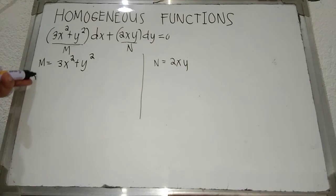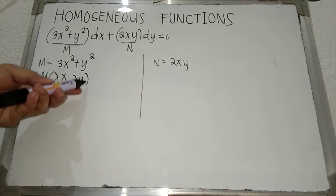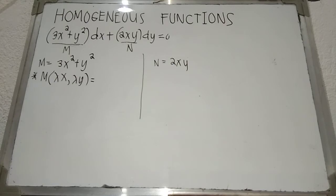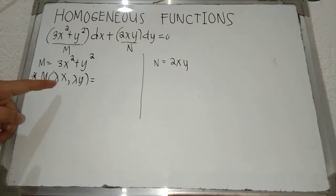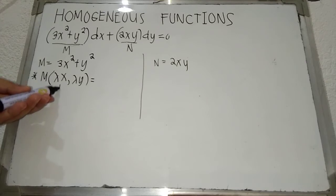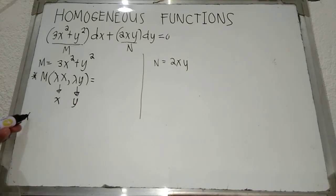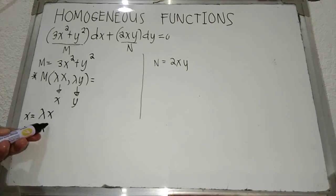First, we evaluate M of lambda x and lambda y. This means we are going to focus on our M function, 3x² plus y². Take note this is a function M having two variables, but this time we have lambda x and lambda y. Our x is replaced with lambda x, and this will serve as our x, and lambda y will serve as our y.